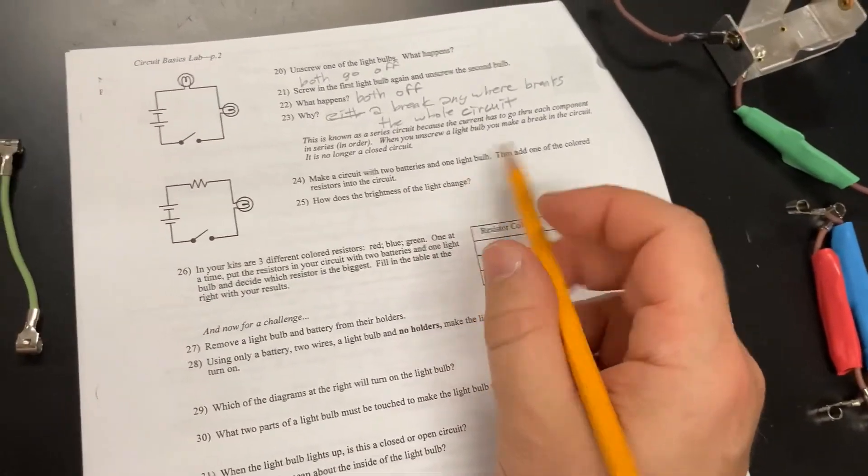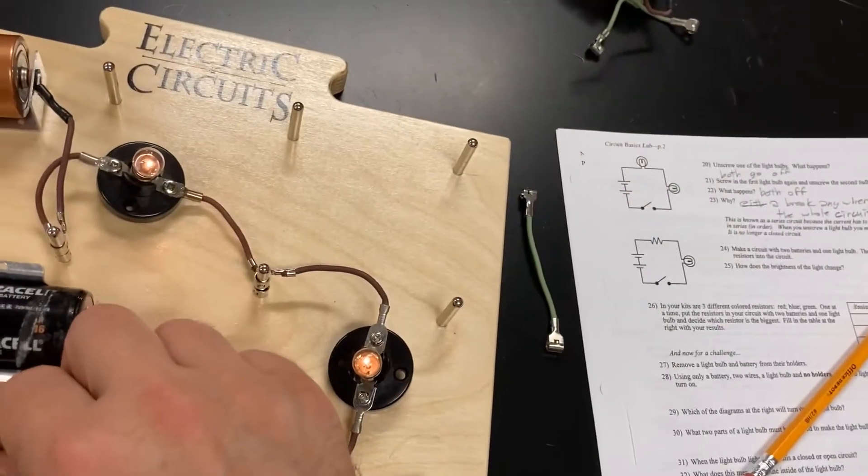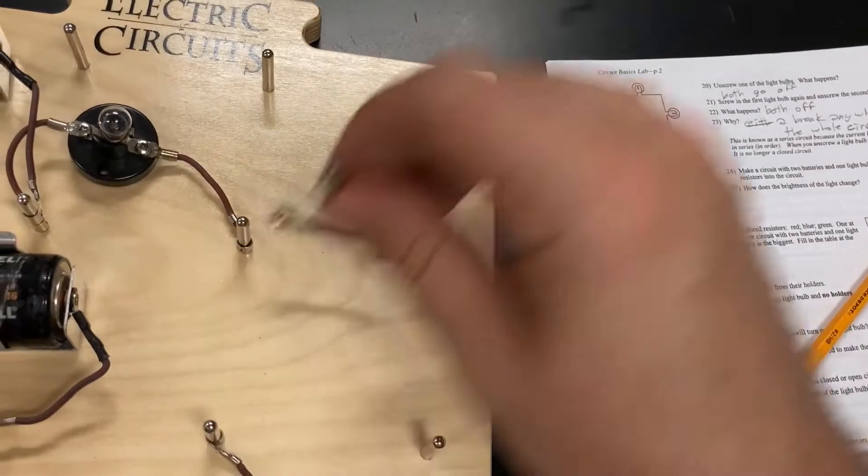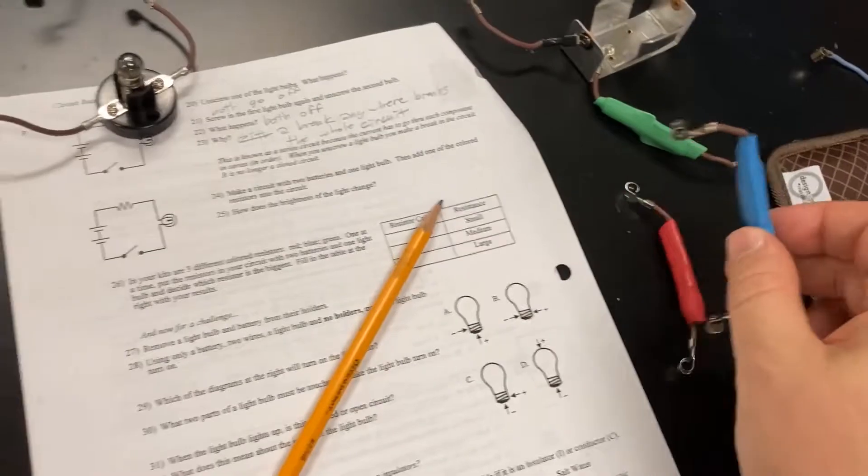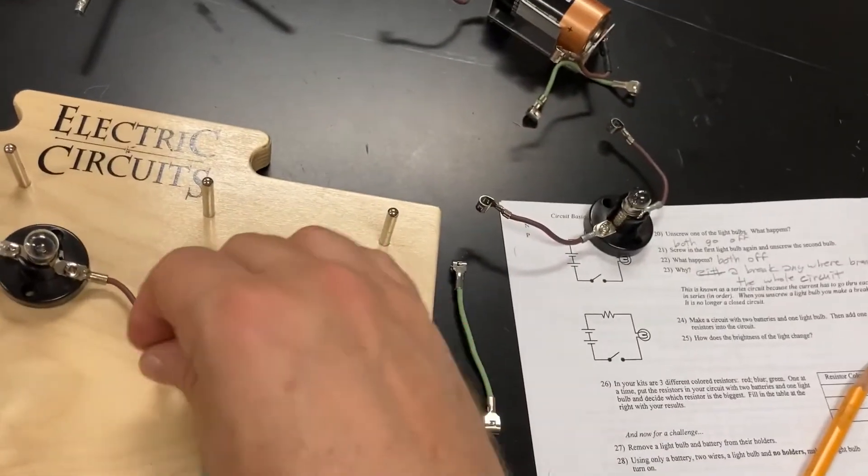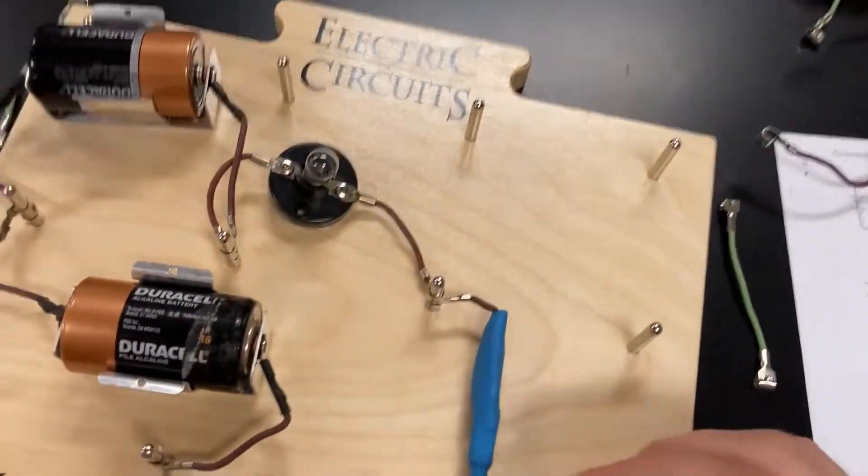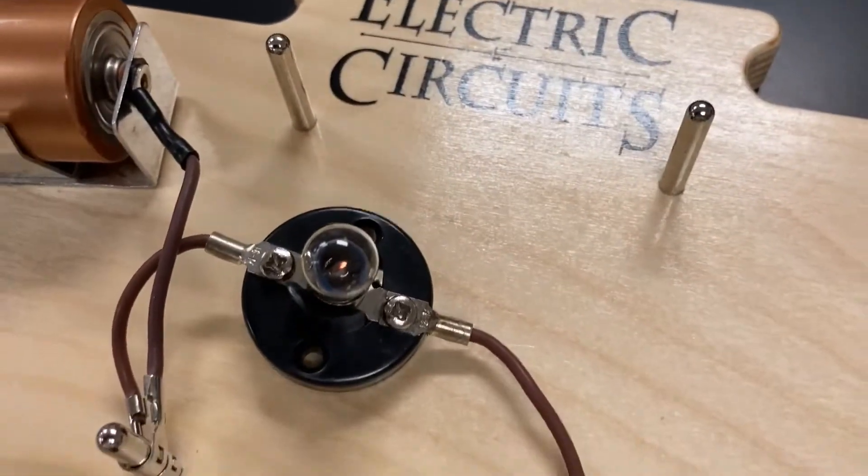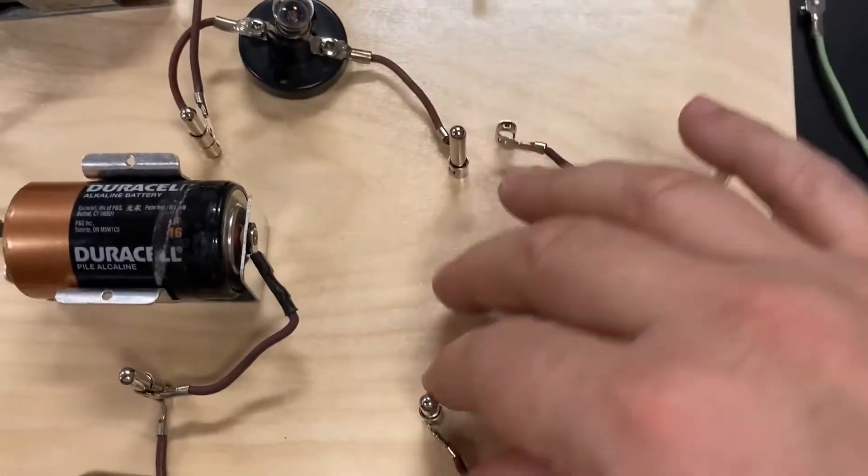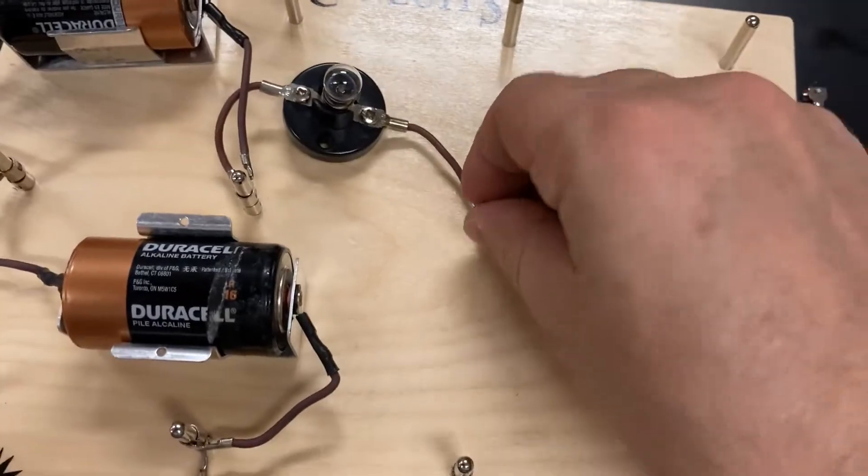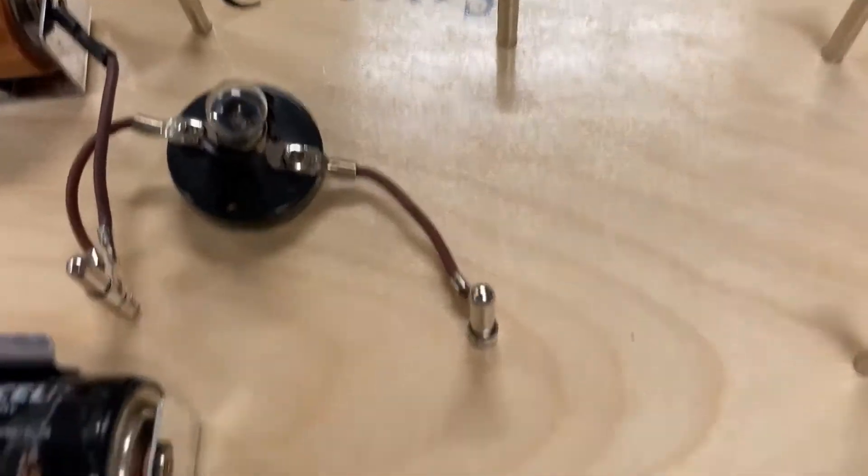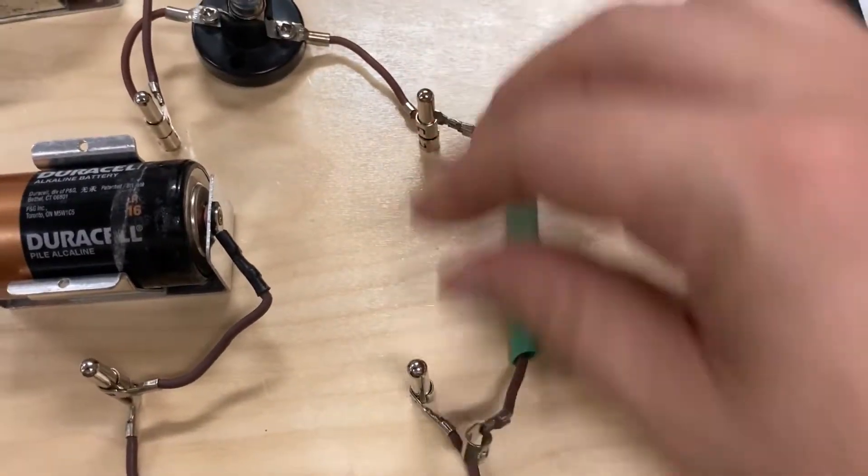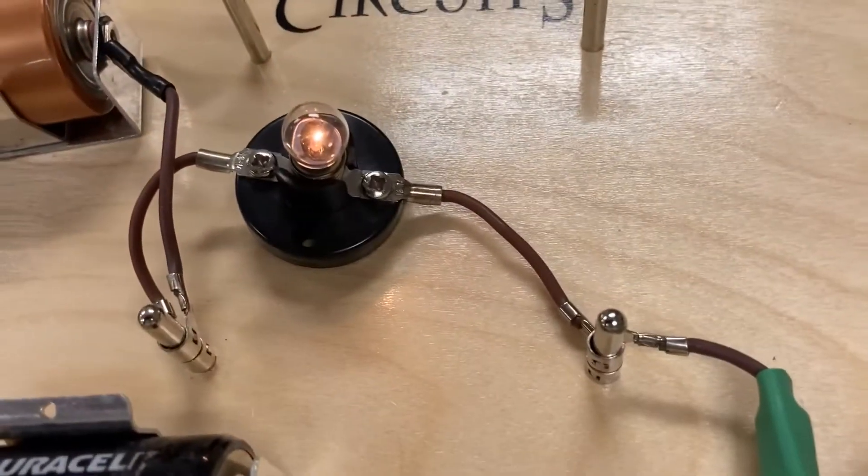So, two batteries, one light bulb. Okay? Two batteries, one light bulb. Okay? Not so stupid. There you go. And it says, then add one of the colored resistors. So, here's the blue one. That came on a little bit. Can you see that? It's on a little bit. That's the blue light bulb. Put the red light, the red one in. Didn't come on at all. I don't see it at all. And the green one. Ah, that's brightest.